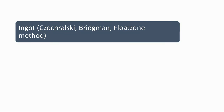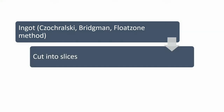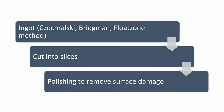The first step is to grow the ingot. We grow the ingot by the method of Czochralski, Bridgman, or Float Zone method. Then we cut it into slices, and we have to polish the slices to remove the surface damage.